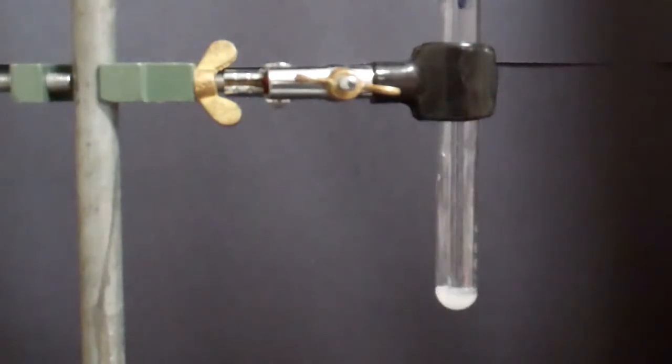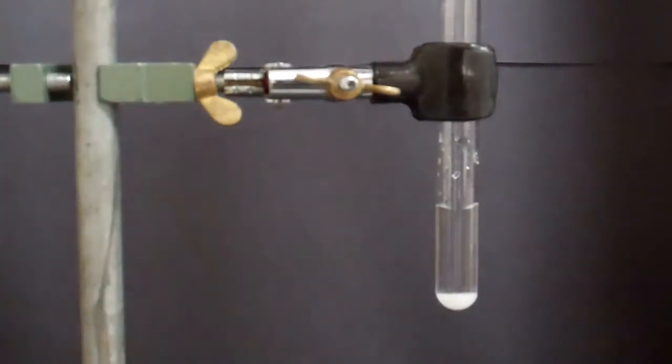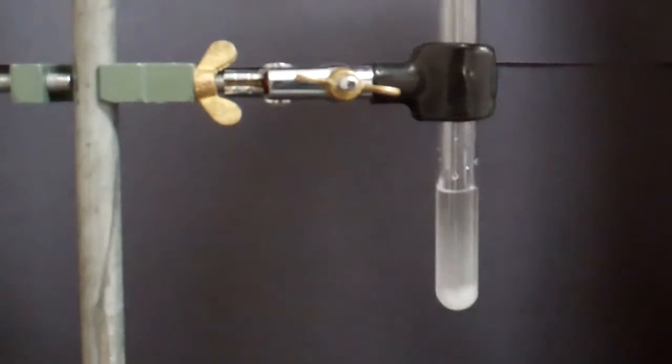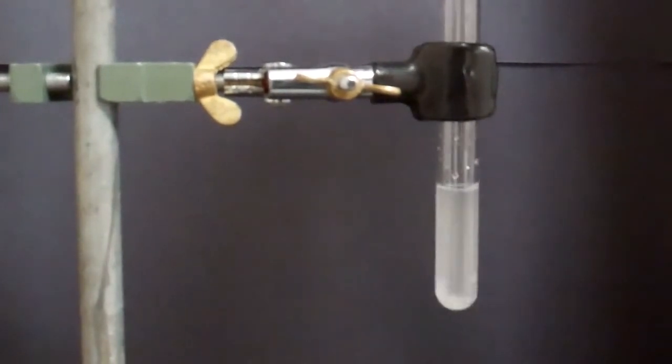We're going to fill up our test tube with a third of distilled water and we'll stir to dissolve. We want to make sure that this is completely dissolved so that we don't get confused with our results.